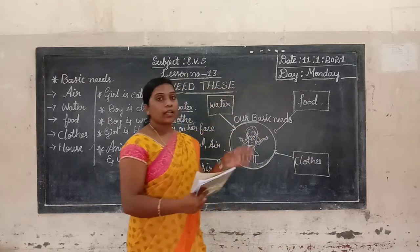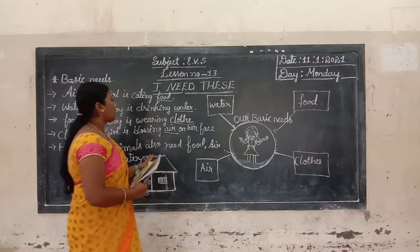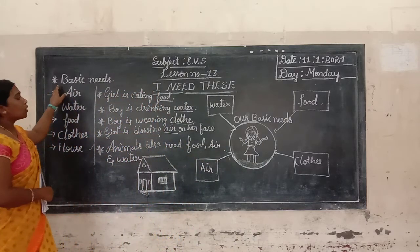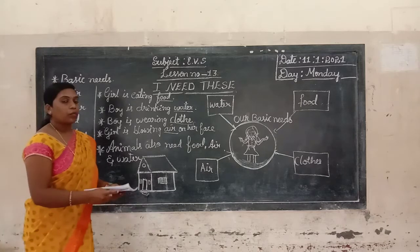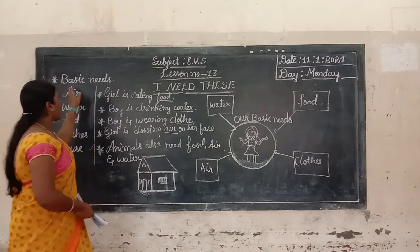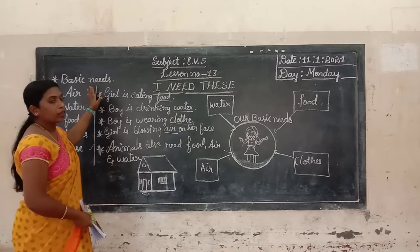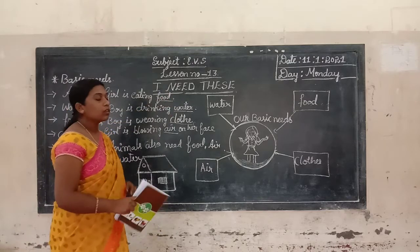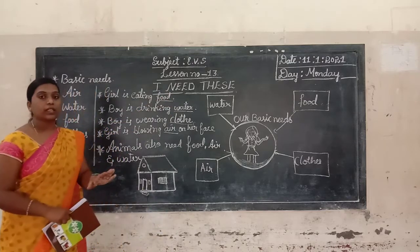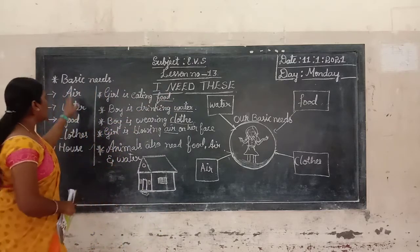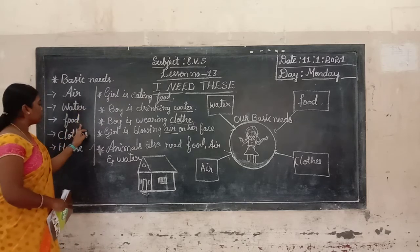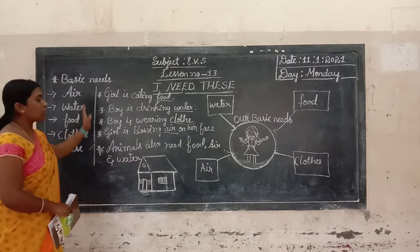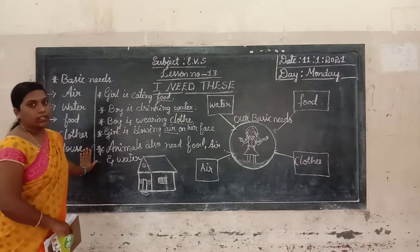Once again I revise today's class. Today we learned about the basic needs. So basic needs are: air, water, food, clothes, and house. These are our basic needs.